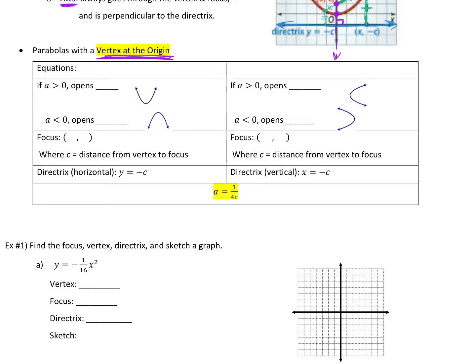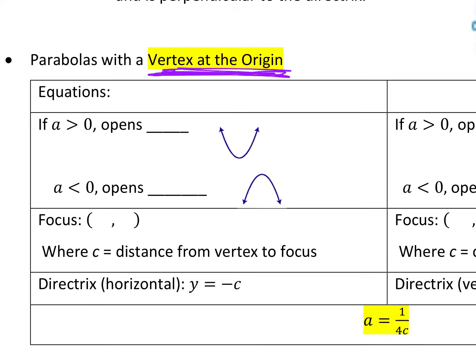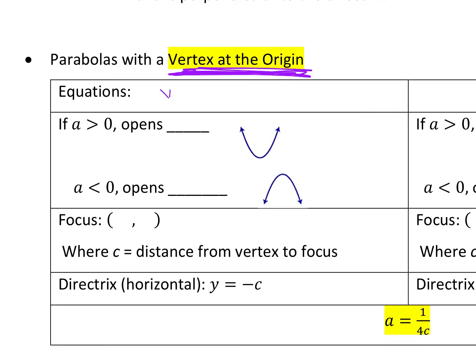The first equation we're going to talk about — this should look fairly familiar — is y equals a times x squared. Do you remember what this number in a parabola does? It's going to determine how wide or narrow. It also determines what direction we open. So if it's positive, it's going to open up if your a value is greater than zero.